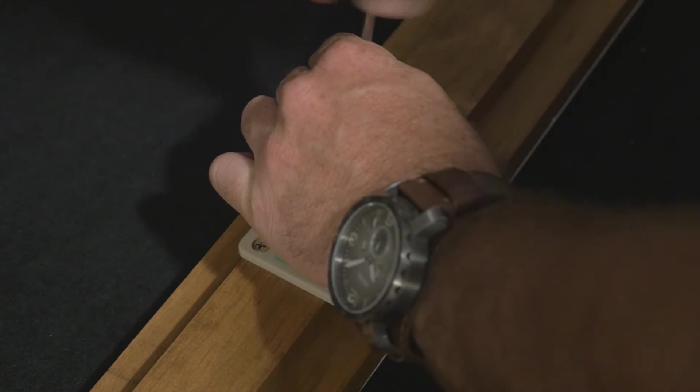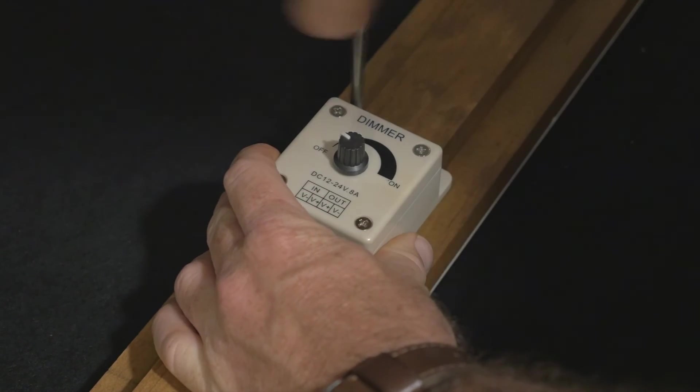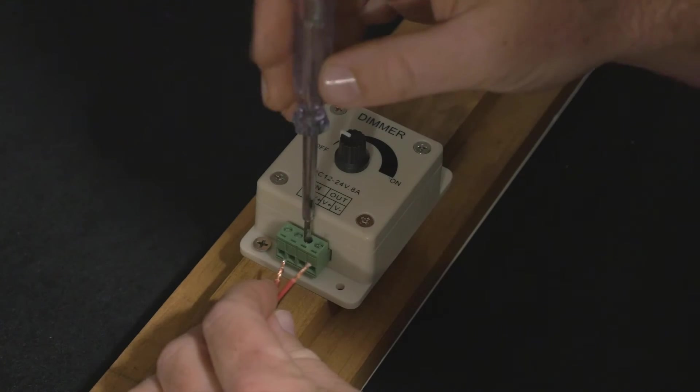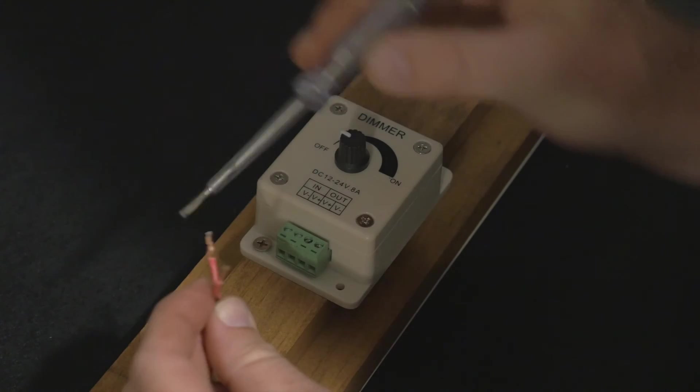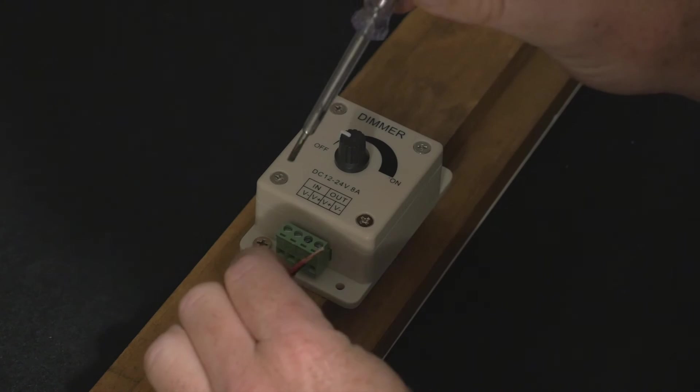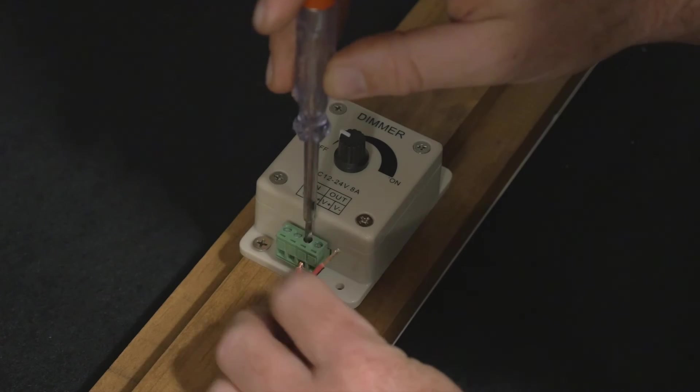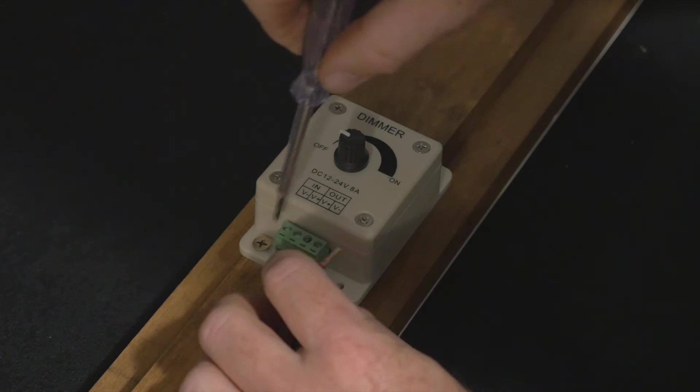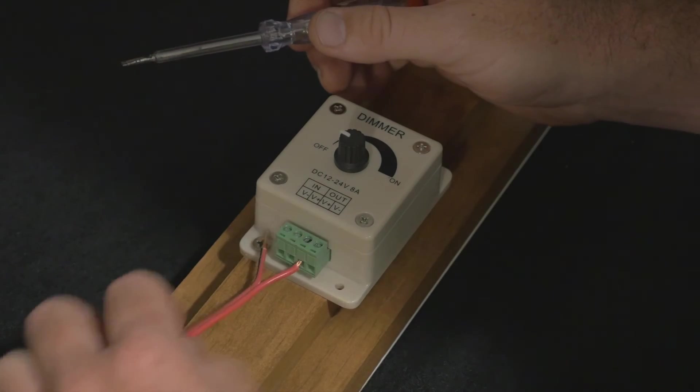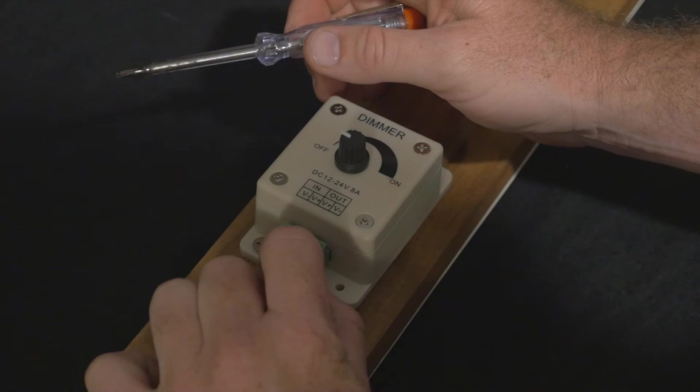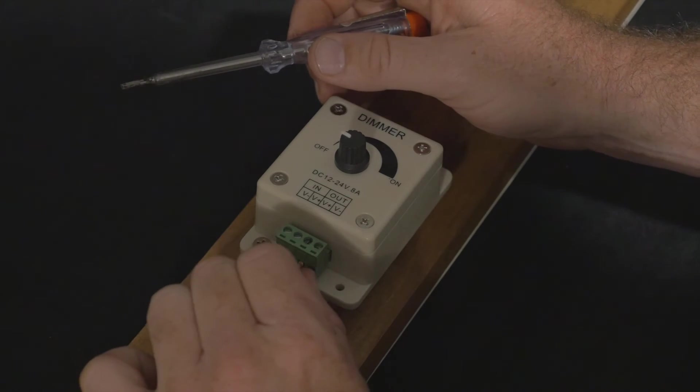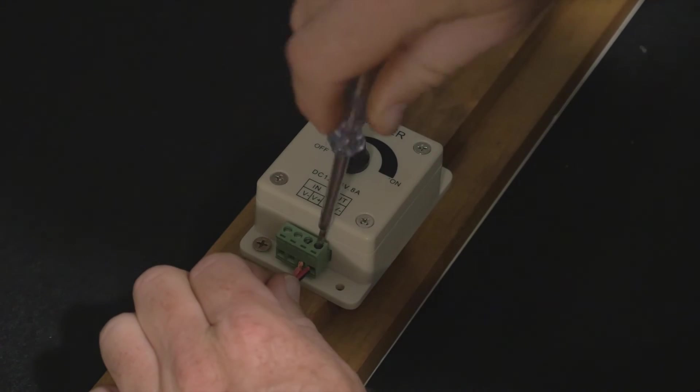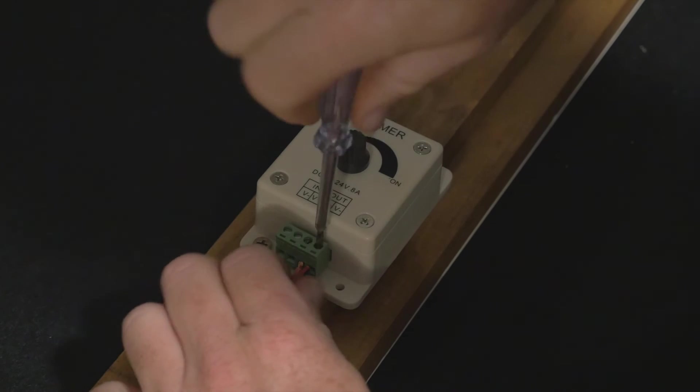I'm using two screws to hold this in, only because it's a little bit wide. Now again if you're using a different type of dimmer switch, you can obviously put a little bit more wood at the back if you want to support it better, but the two screws are strong enough for what I'm doing. Next thing I'm going to do is put the positive and negative wires into the out sockets. And with this model of dimmer switch I'm just going to use a screwdriver to tighten them in like so.